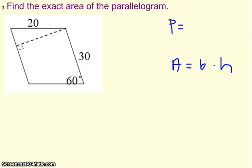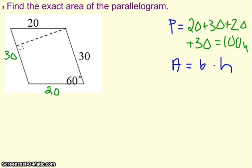I think we'll actually get this one done very quickly. If you can remember back in Chapter 6, the properties of a parallelogram, one of the properties is that opposite sides are congruent. So if the top is 20, the bottom is 20. The right is 30, the left is 30. So the perimeter is simply going to be 20 plus 30 plus 20 plus 30, which gives us 100 units.